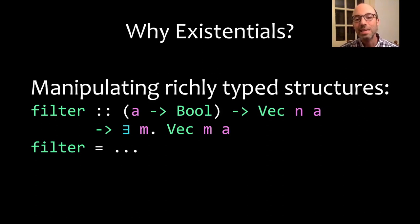That means there's going to be some length of my output vector, but I don't know what it's going to be. In other words, it's going to be existentially bound. There exists a length m, but I don't know what it is.